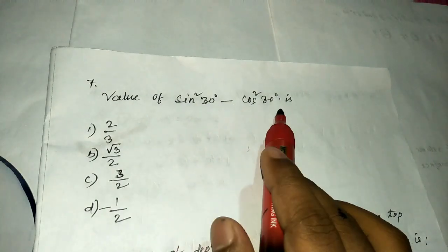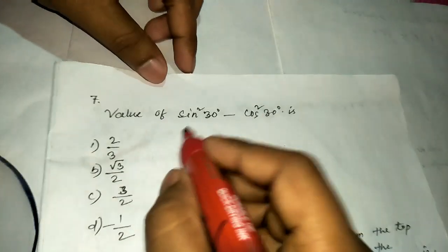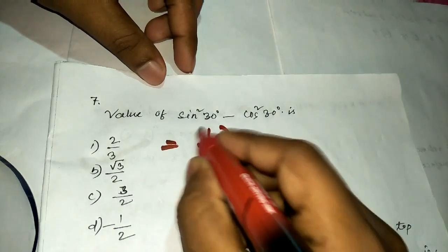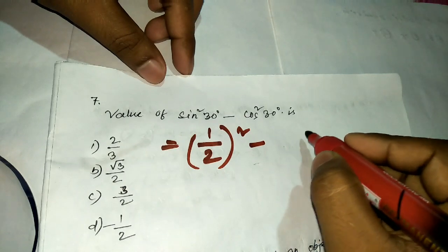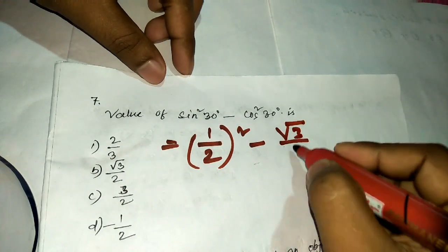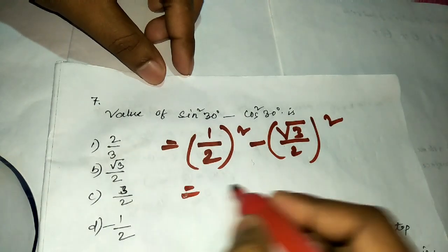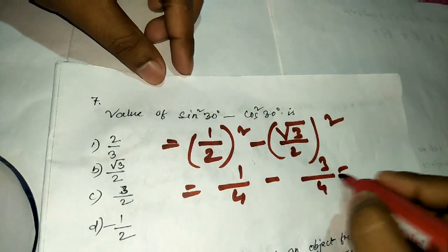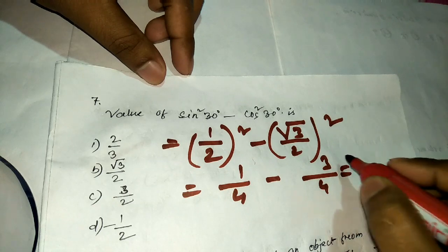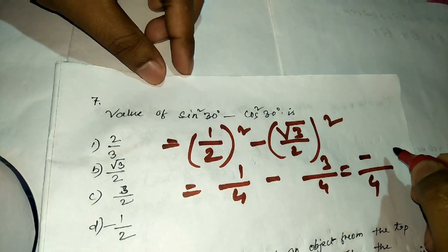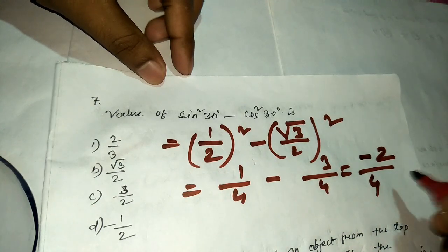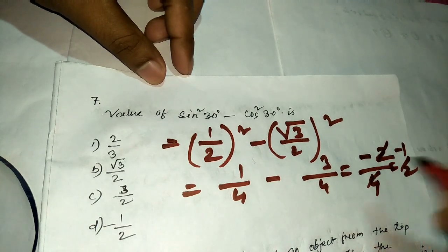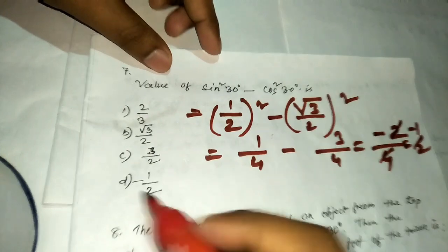Question number seven: find the value of sin²30 − cos²30. sin 30 = 1/2, so sin²30 = 1/4. cos 30 = √3/2, so cos²30 = 3/4. Therefore 1/4 − 3/4 = −2/4 = −1/2. The answer is −1/2, which is option T.